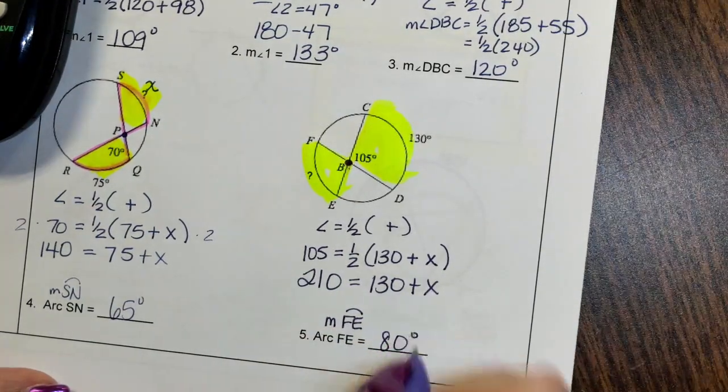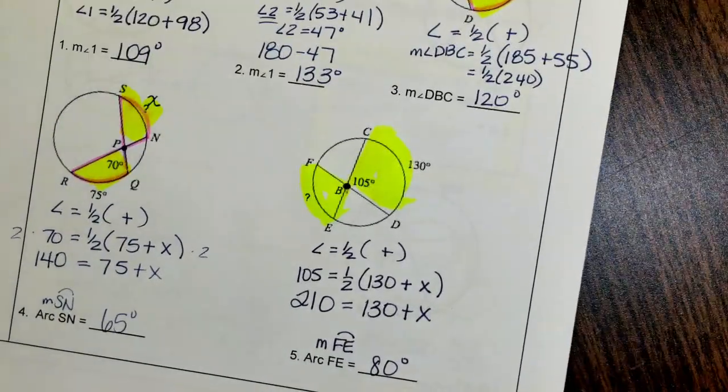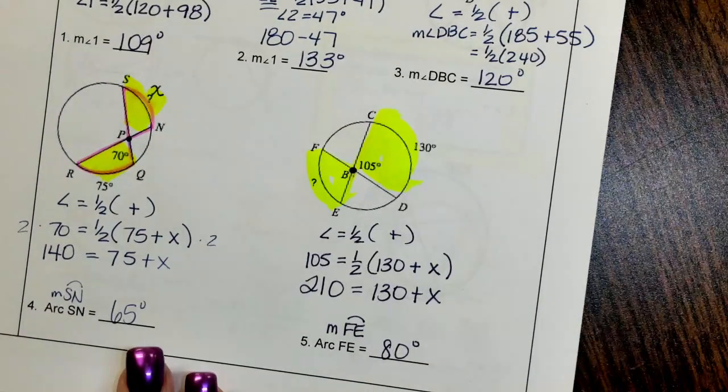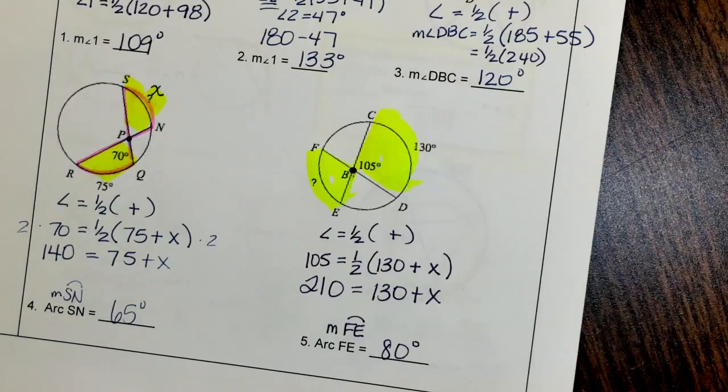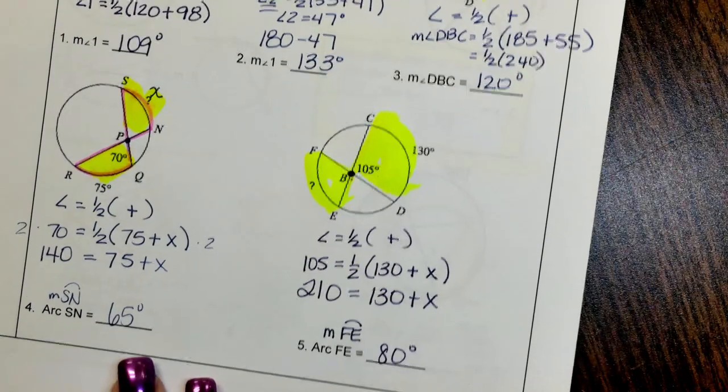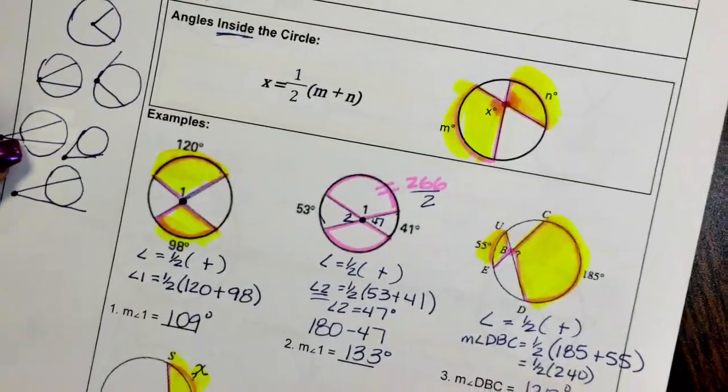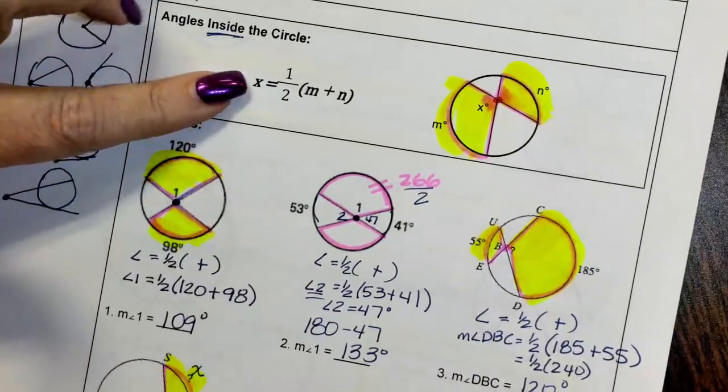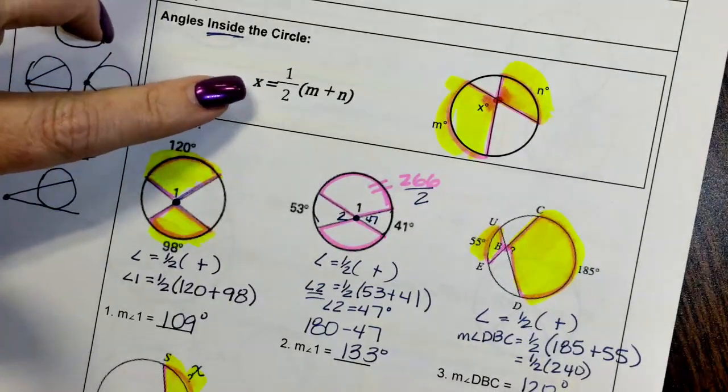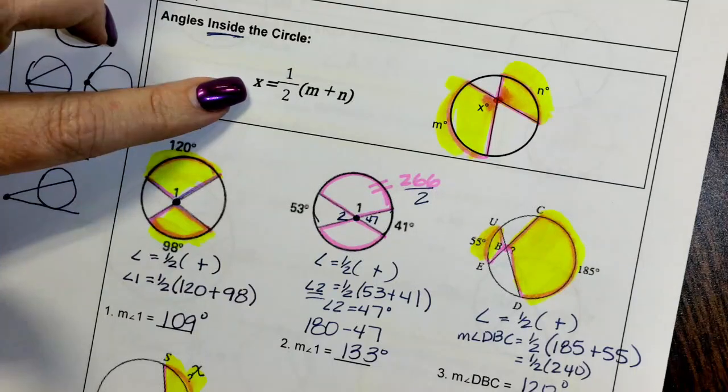So that pulls everything together. We've got our vertex in the center, we got our vertex on, we had our vertex outside, and then today we added our fourth and last, that our vertex is inside but not in the center. The angle is equal to half of the sum.